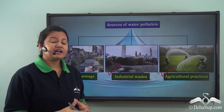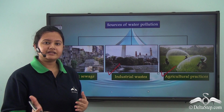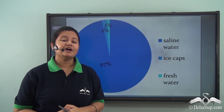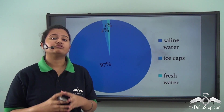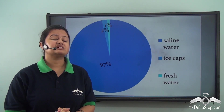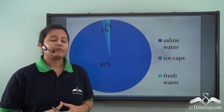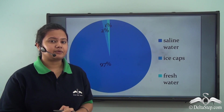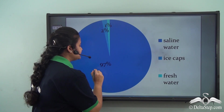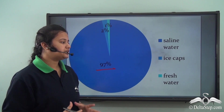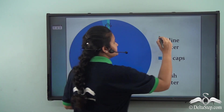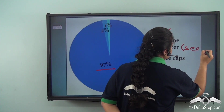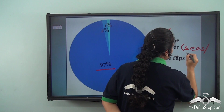Water pollution is a matter of serious concern. Although 71% of the earth's surface is covered with water, which is a renewable resource, only a small portion is fit for human use. This is because 97% of the total water available on earth is in saline form, present in seas or oceans.